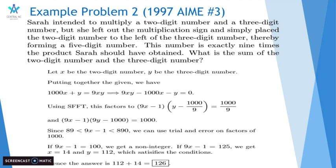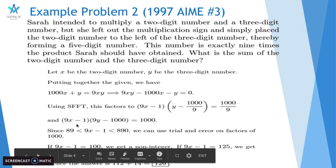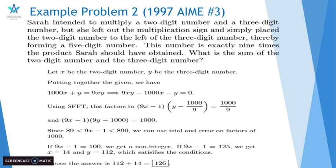We multiply 9 by both sides to simplify the equation, and we get 9x minus 1 times 9y minus 1000 equals 1000. Since 89 is less than 9x minus 1, which is less than 890 because x is a 2-digit number, we can use trial and error on factors of 1000.